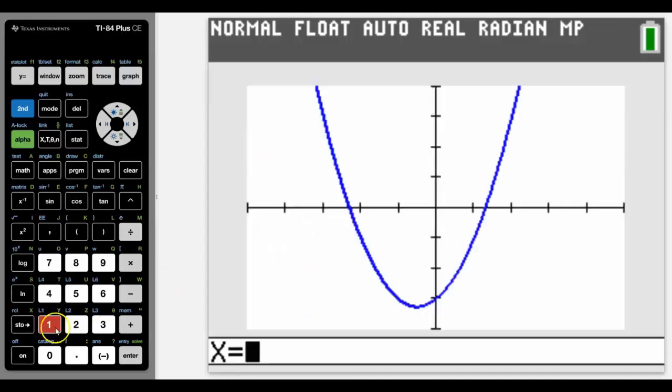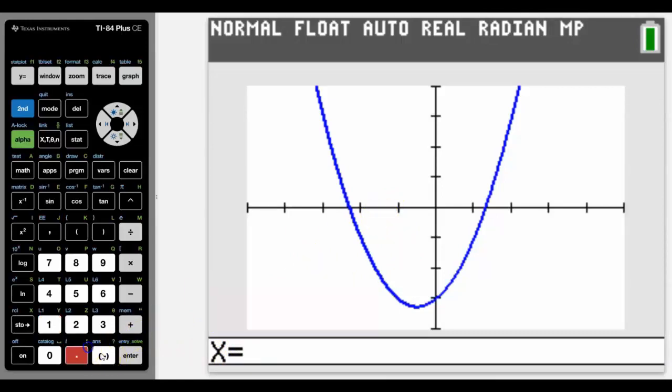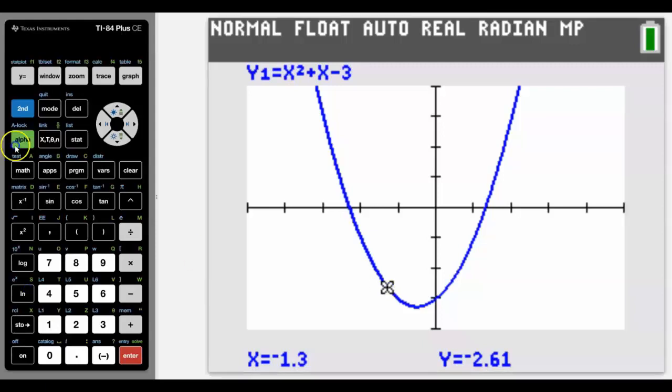Value will return a y value for a particular x value, so in this case let's look at negative 1.3, and it will return the suitable y value at that point on the curve.